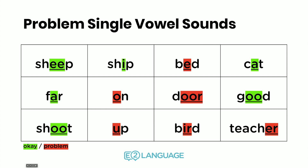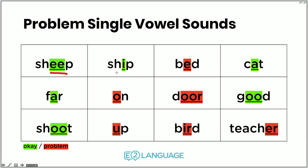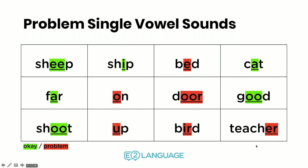In green are the vowel sounds that you do not have problems with, but in red are the vowel sounds that you do have problems with. Let's go through them together. You should be fine with: sheep, ship, cat, far, good, and shoot. Problematic ones include: 'eh' as in bed, 'oh' as in on, 'or' as in door, 'ah' as in up, 'er' as in bird, and the schwa as in teacher. So let's have a closer look at these specific ones.